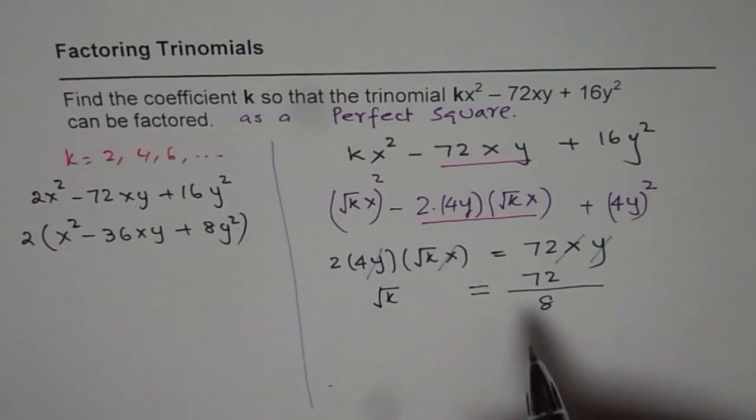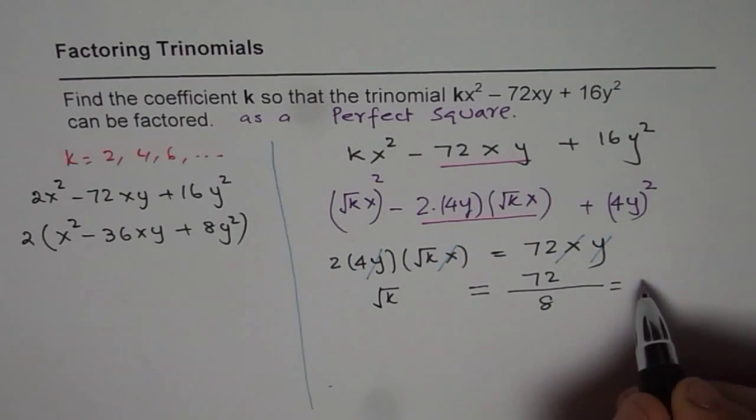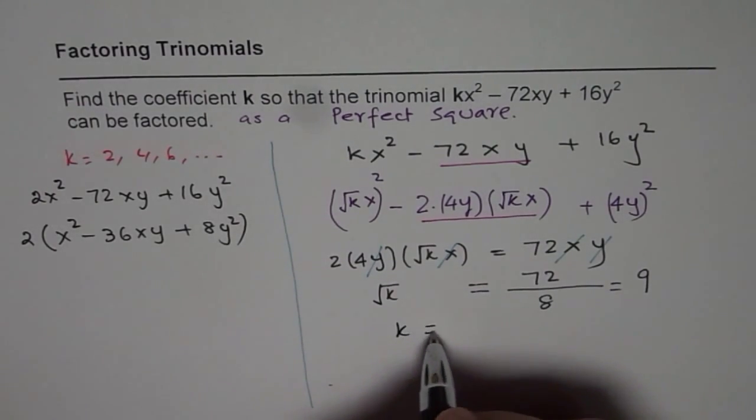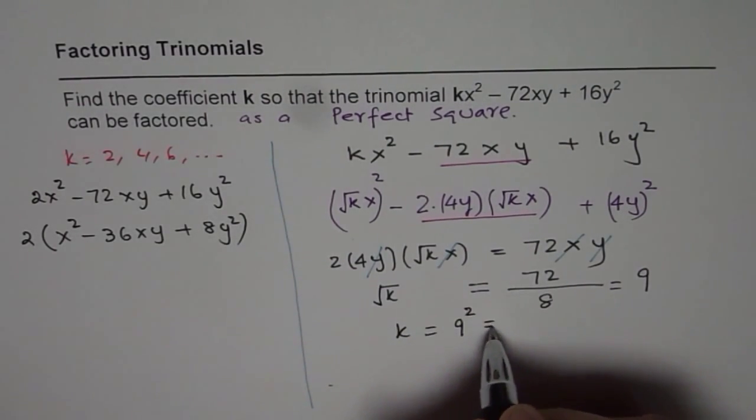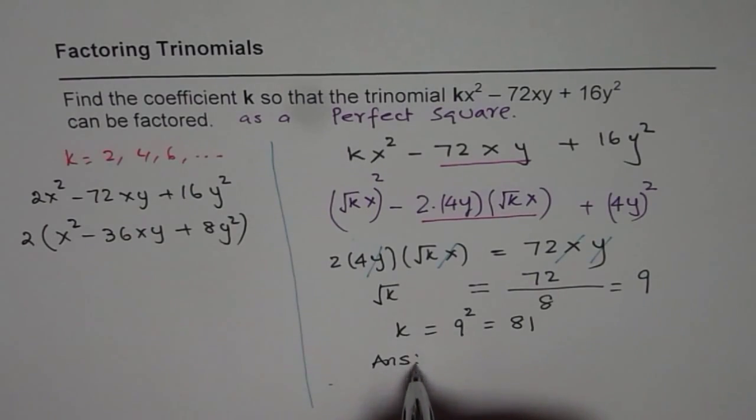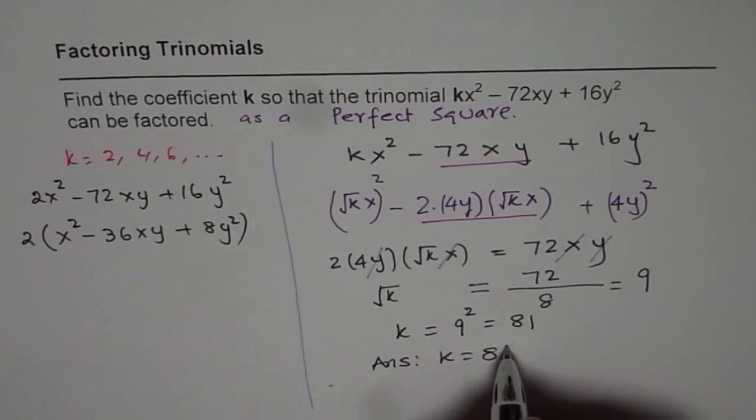Let me write 8 because 8 times 9 is 72, perfect. So that means k equals 9² or 81. So we get our answer and that is k equals 81.